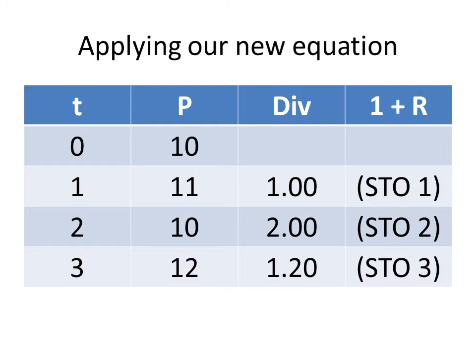1.20 means that the return during this time period was 20%. And that makes sense because we had a dollar in capital gain and a dollar in dividends for a total of a gain of $2. 2 divided by 10 is 20%. Now while you have that 1.2 up on your screen, I want you to look at your calculator. There's a button on the left hand side that says STO. That means store. I want you to hit that right now and then the number 1.